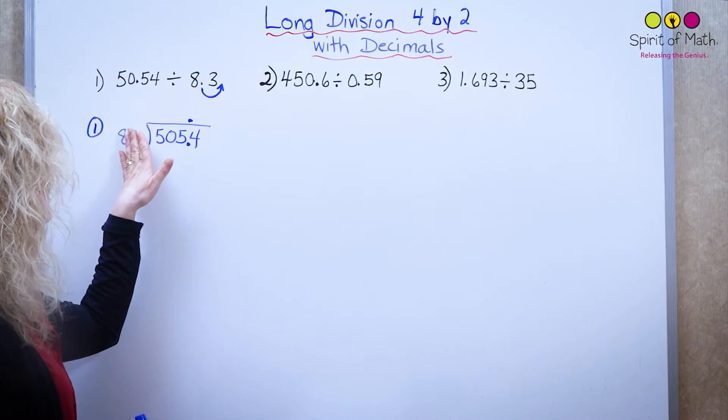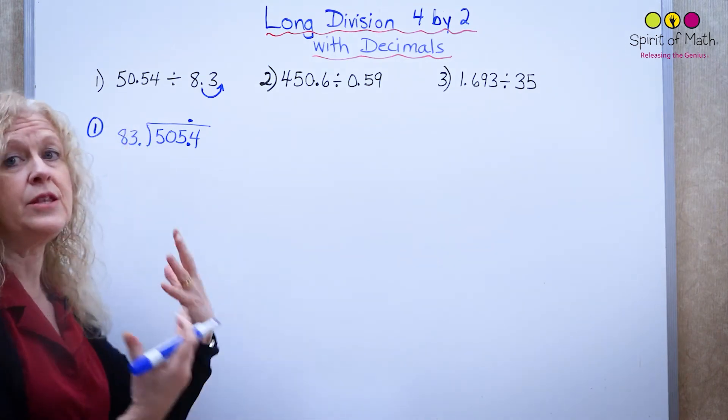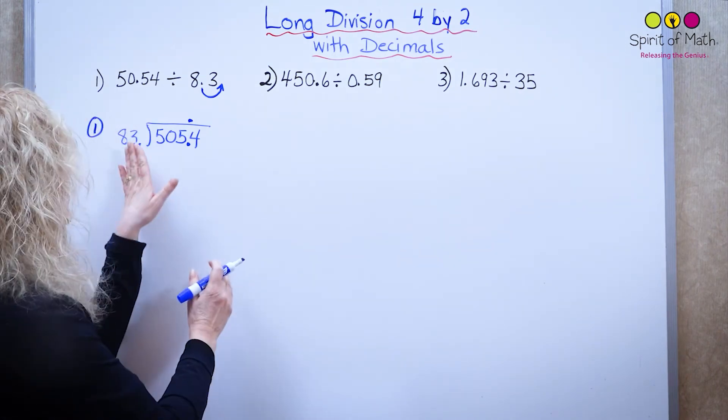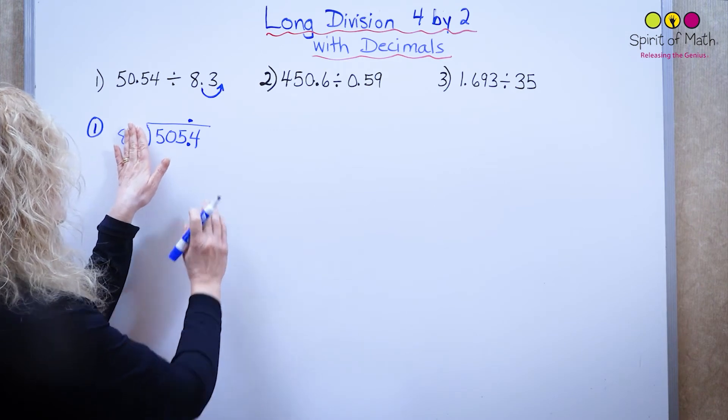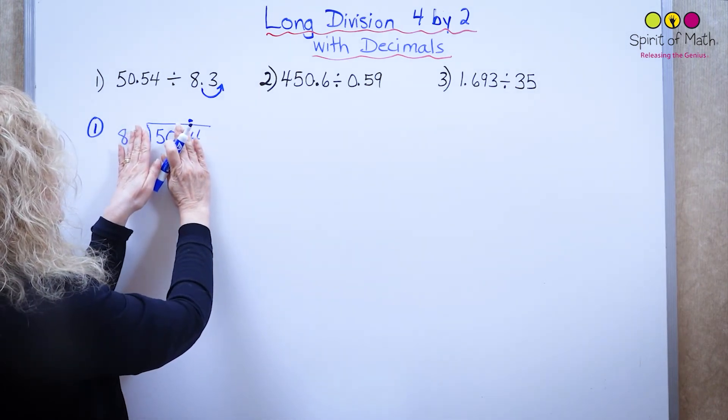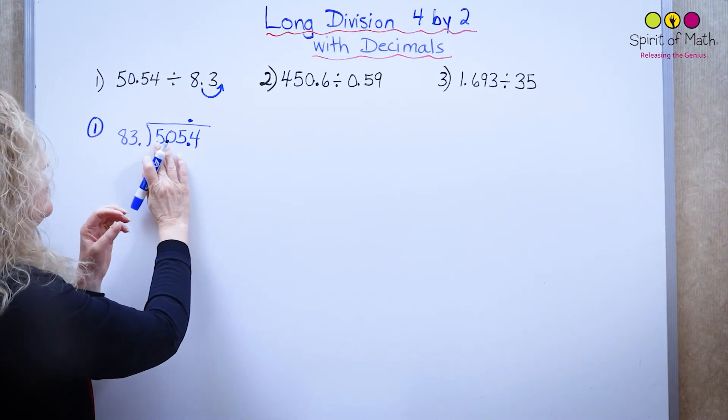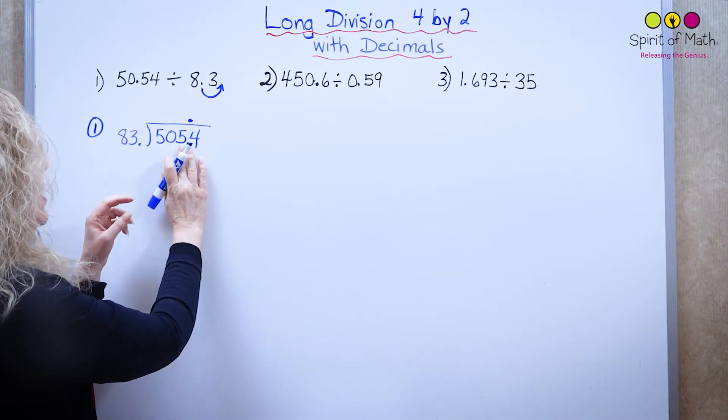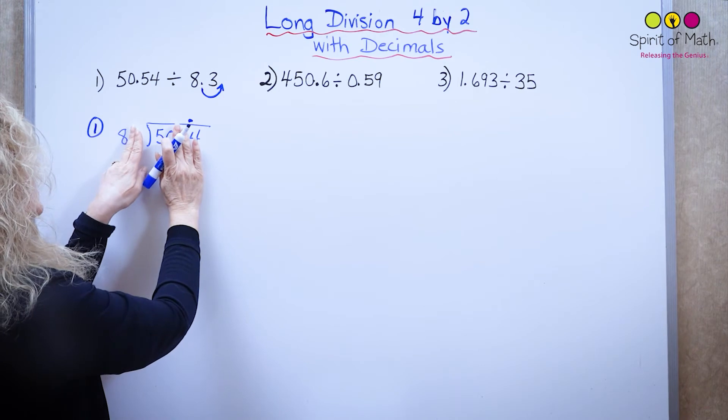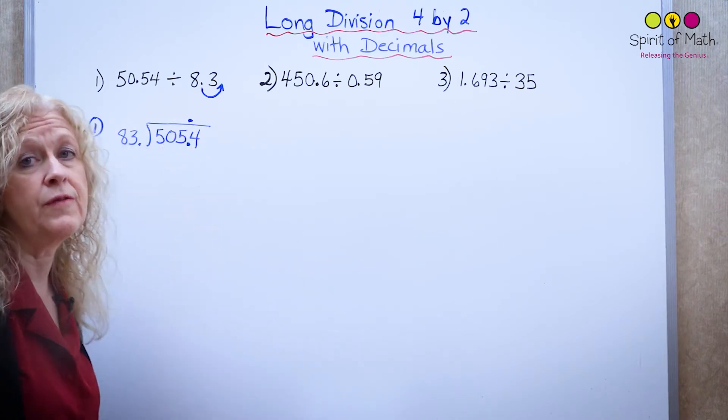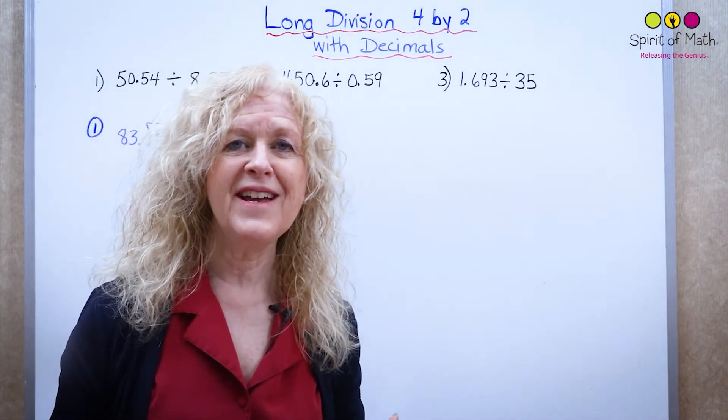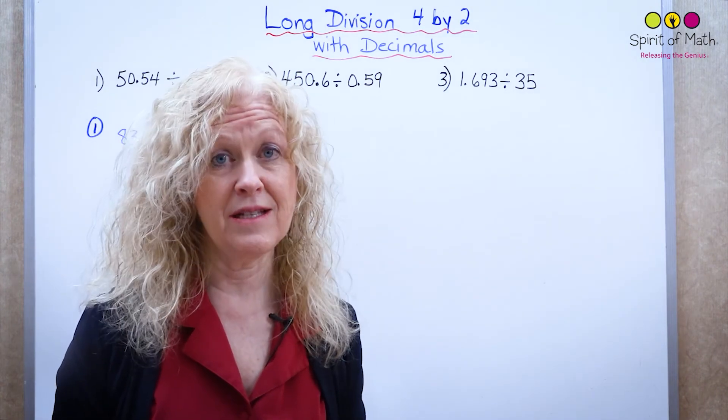So the first thing I'm going to say here is, pretend you didn't have that 83, because that makes it really difficult. Sort of put your hand over that three. We know for sure it can't go in 50. So you need 83 into 505, but let's take off the last digit and just say 8 into 50. That will allow you to make a type of guess.